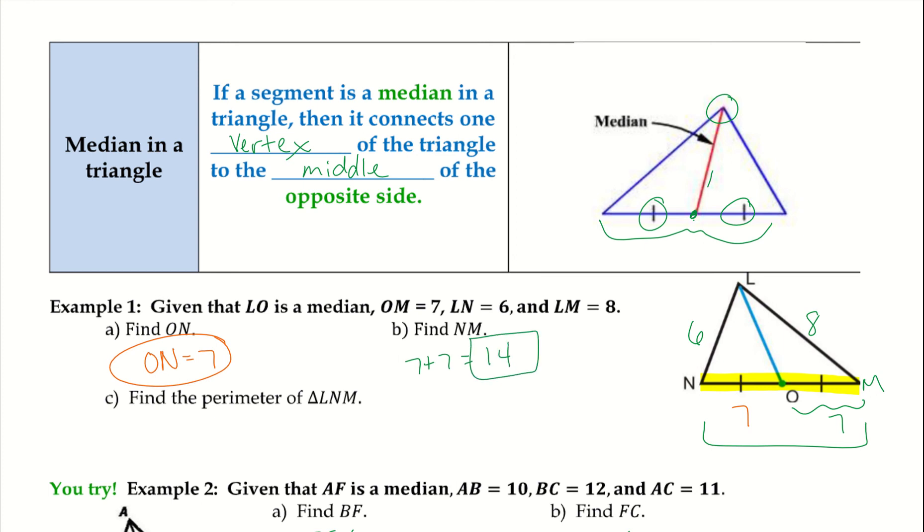When we have that median and it divides it into those two equal parts, whatever number the whole thing is, if we divide that in half it will give us our two equal parts as well. So if you have the whole thing and you're trying to find parts of it, all you have to do is divide it in half.